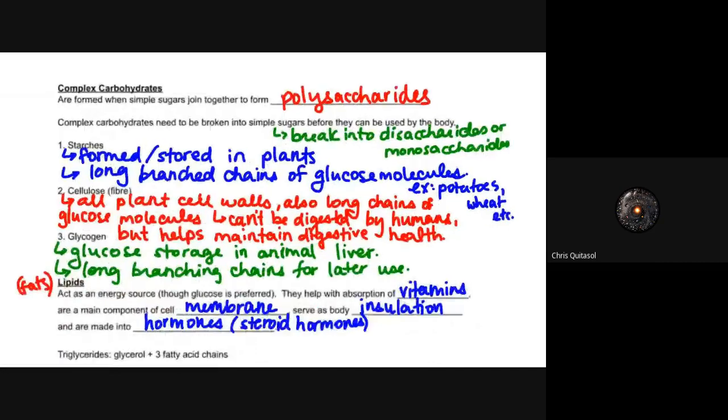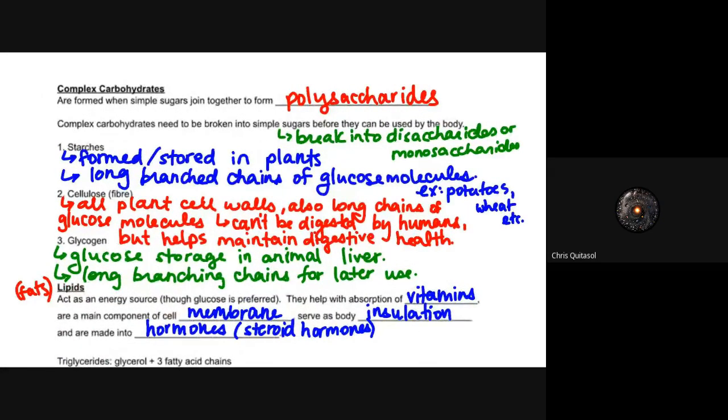With regards to complex carbohydrates, it's important to recognize that these simple sugars join together to form polysaccharides—poly meaning many, so many saccharides or many sugars. These complex carbohydrates are then going to be broken down into simple sugars, and they're broken into disaccharides and monosaccharides by the body, and that way they can utilize them because most of these sugars are found in that polysaccharide form. And some of these polysaccharides include but aren't limited to starches, cellulose, and glycogen. With starches, they're formed and stored in plants, these long branching chains of those glucose molecules, and you see them in starchier things like potatoes, in certain types of wheat and other types of root vegetables.